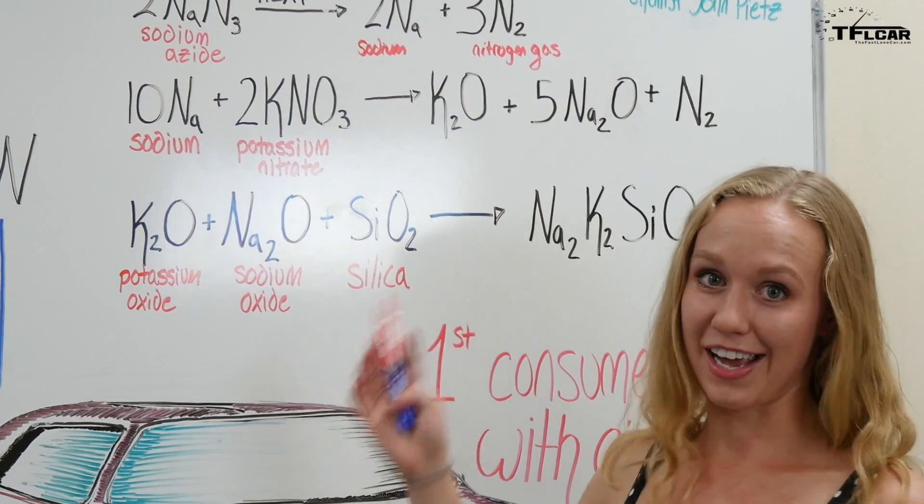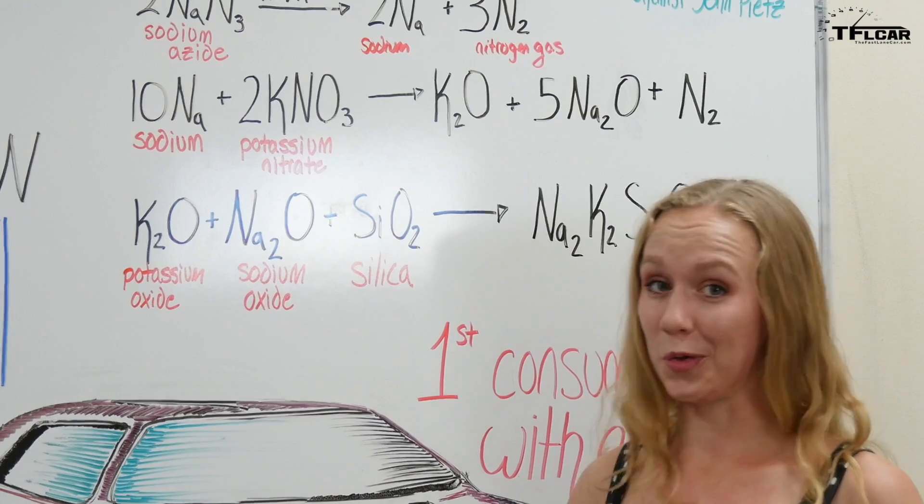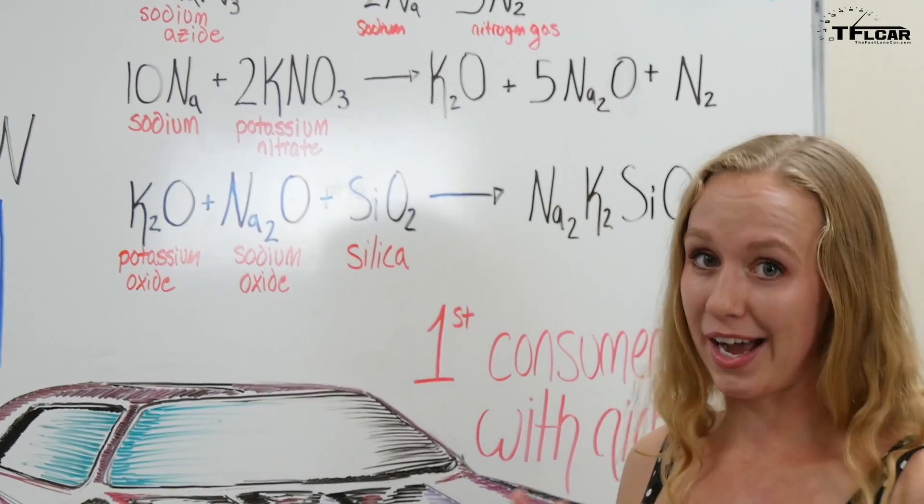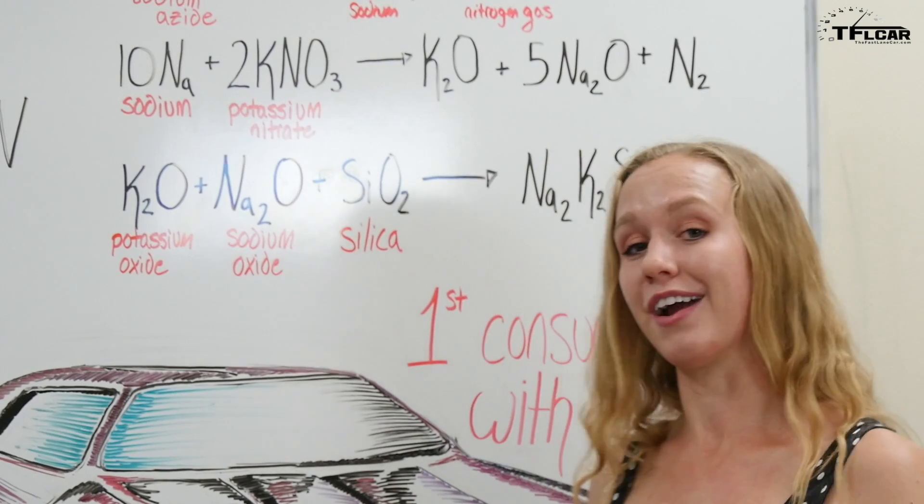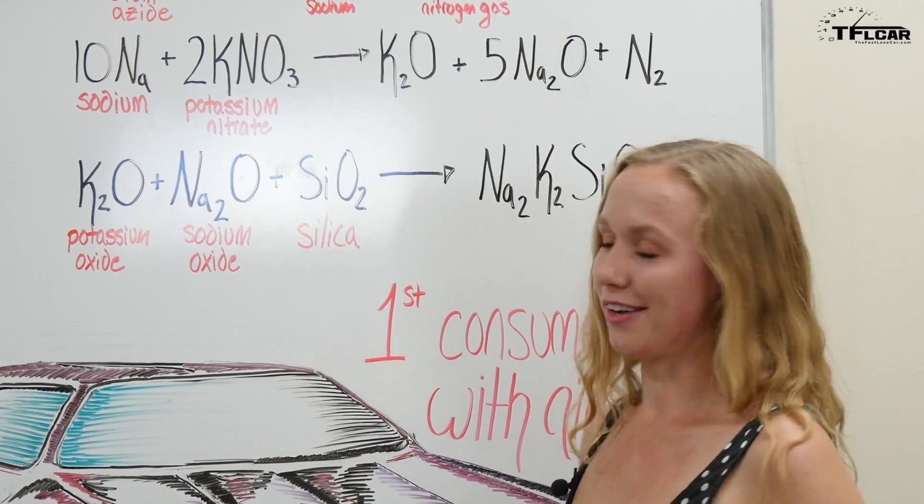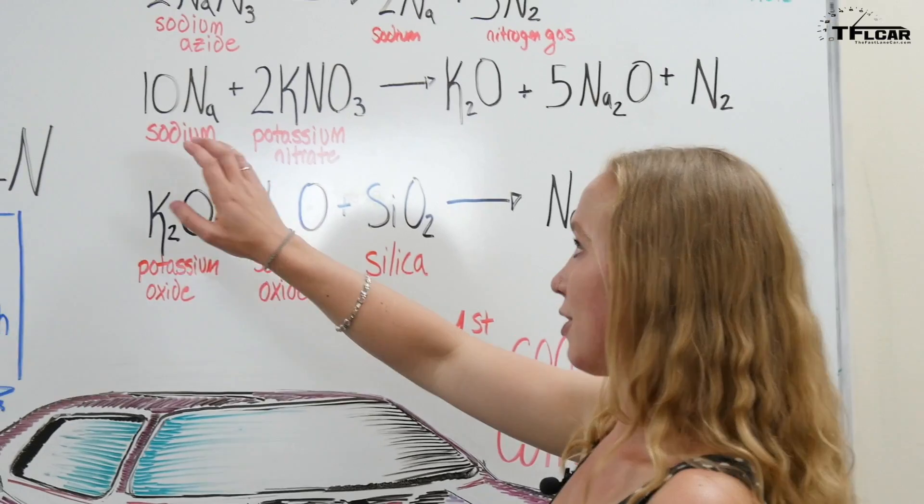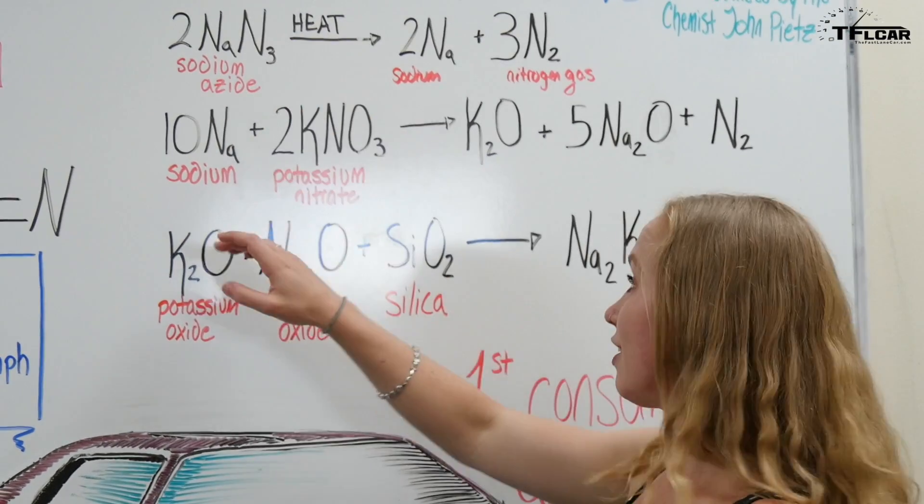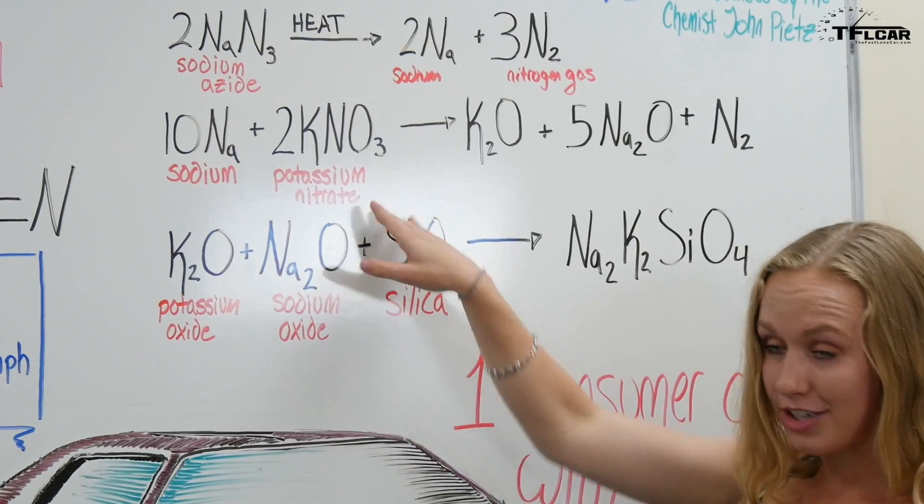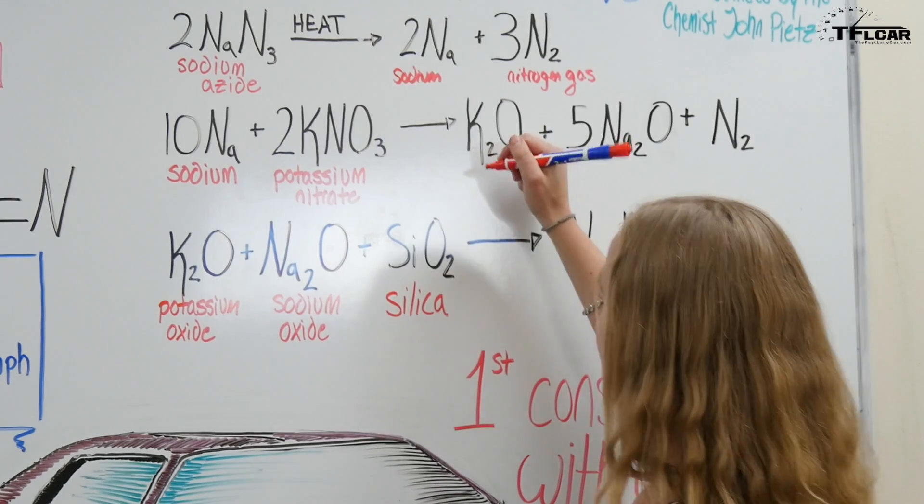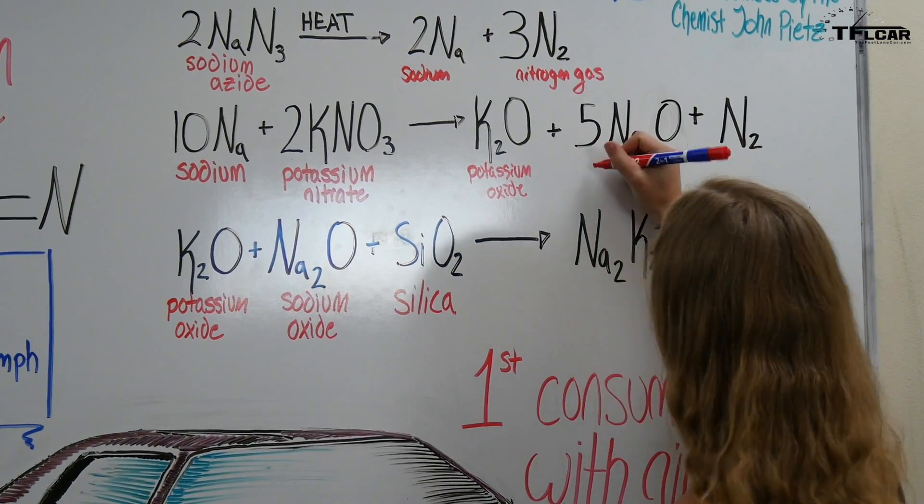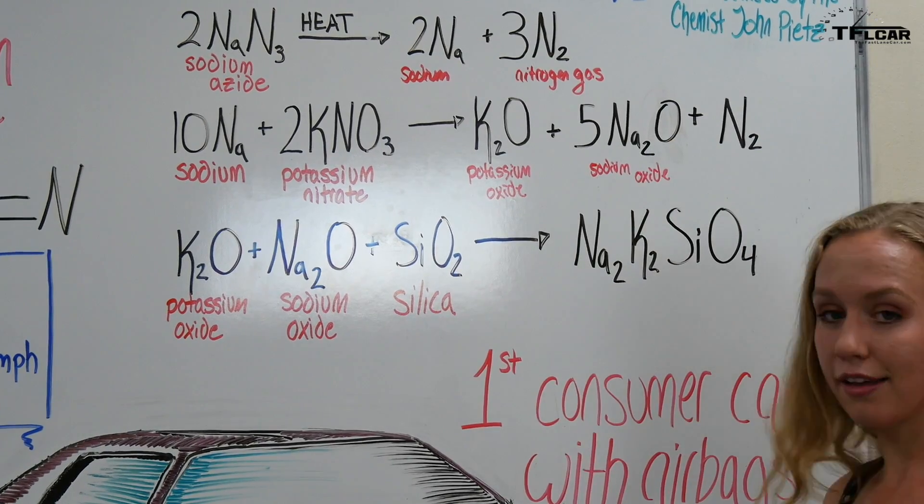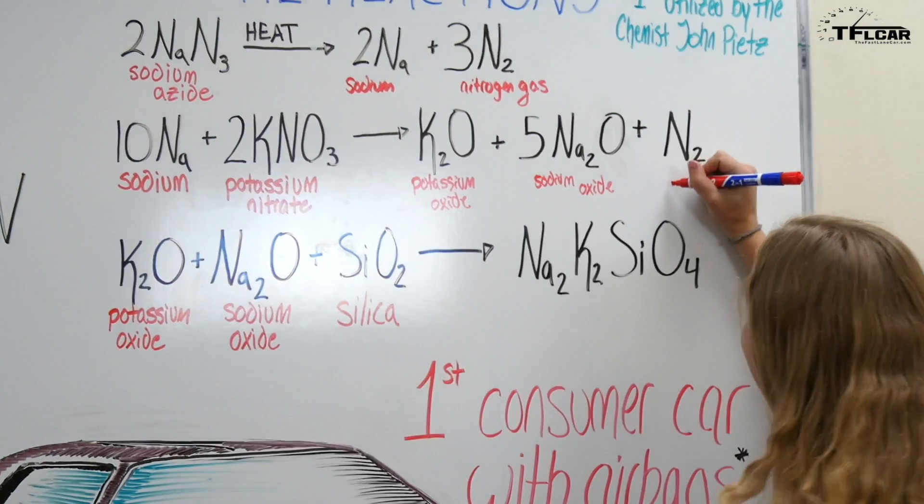You've produced a whole lot of gas however you've also produced a whole lot of sodium and sodium by itself is extremely dangerous as far as humans go so the way you want to get rid of that is taking the sodium that was produced in the first reaction and mixing it with potassium nitrate and then producing potassium oxide, sodium oxide, and nitrogen gas again.